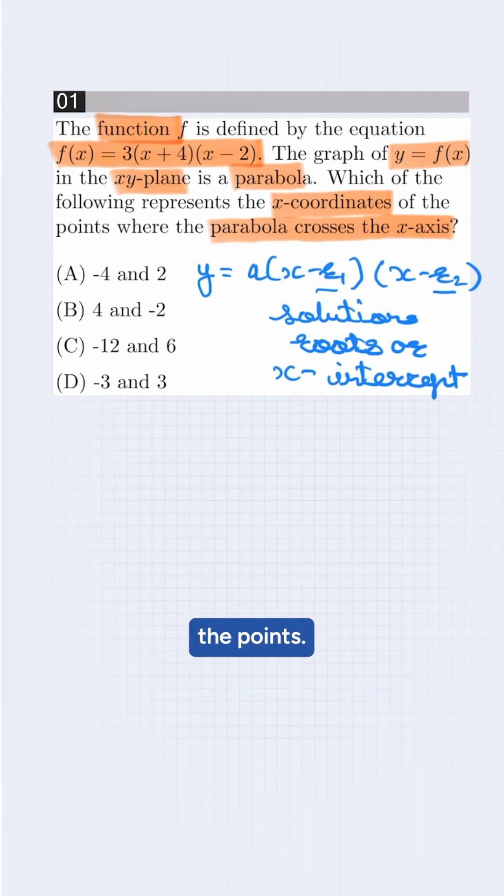We need to find the points, so we need to find r1 and r2. We set f(x) = 0, so it will be 3(x + 4)(x - 2) = 0.